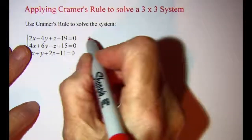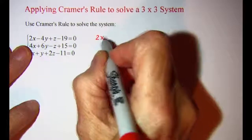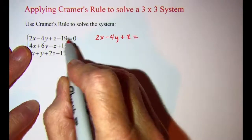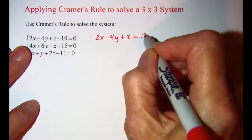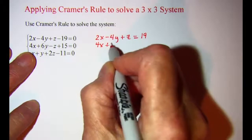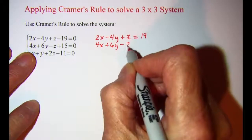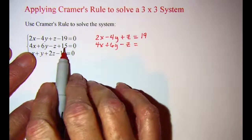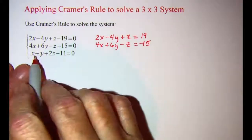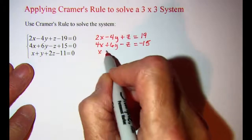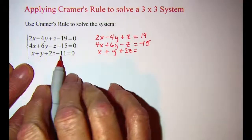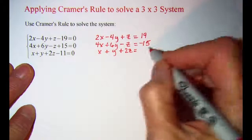So the first equation becomes 2x minus 4y plus z equals positive 19. The second equation becomes 4x plus 6y minus z equals negative 15. And the third equation is x plus y plus 2z equals positive 11.